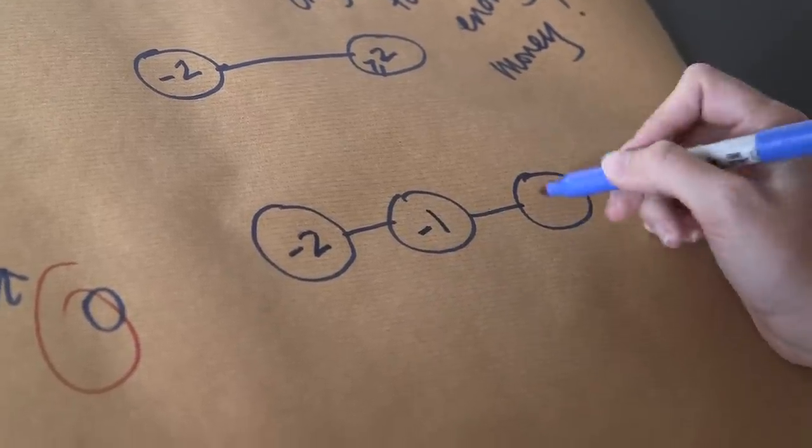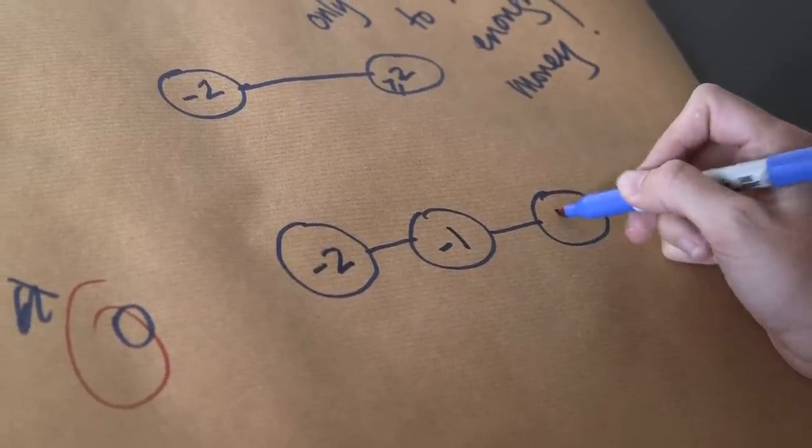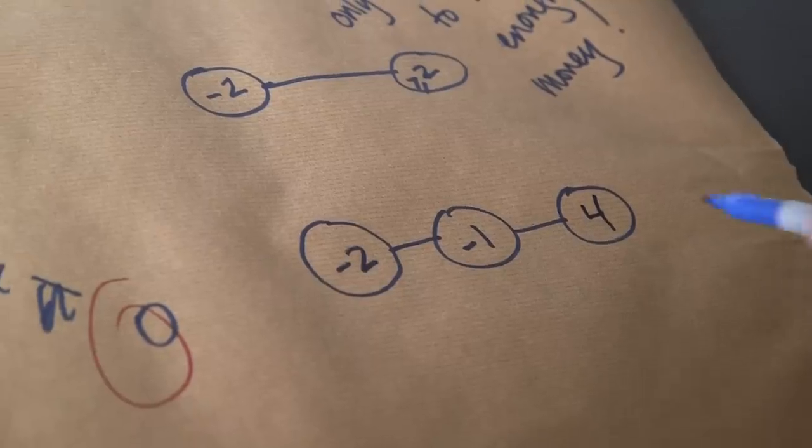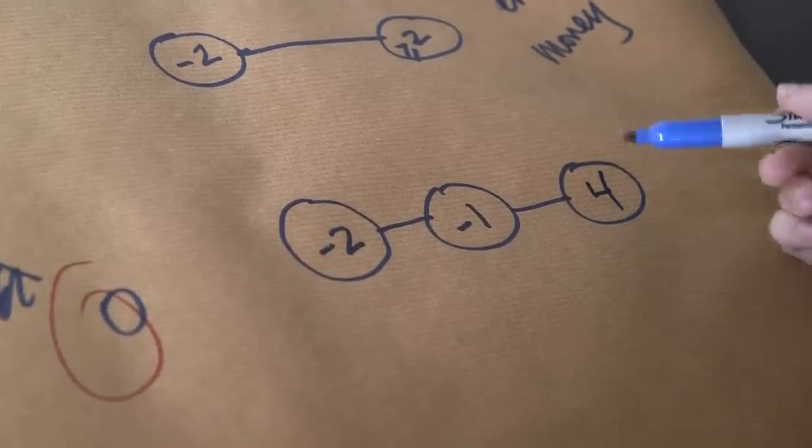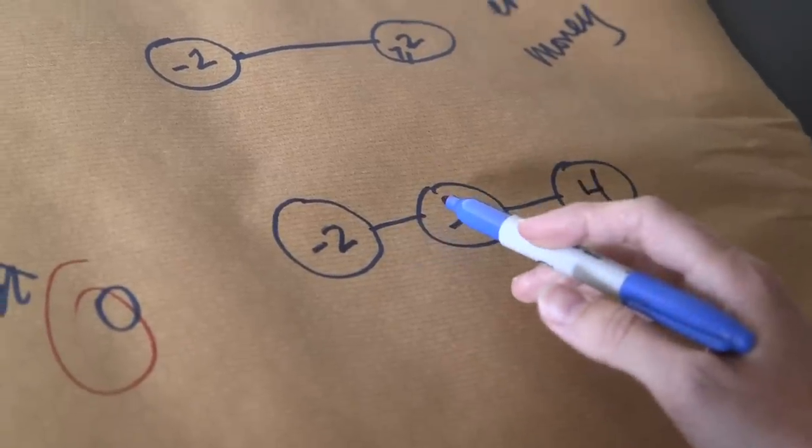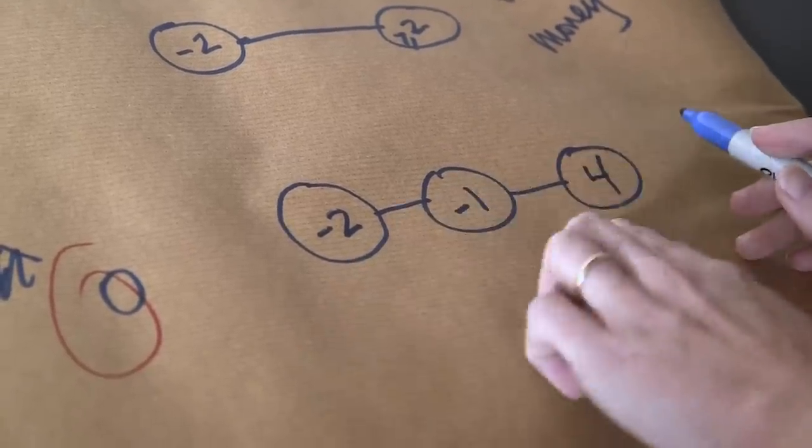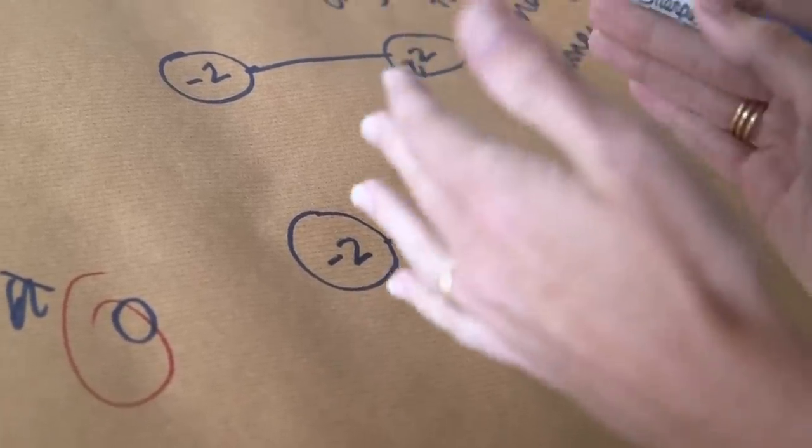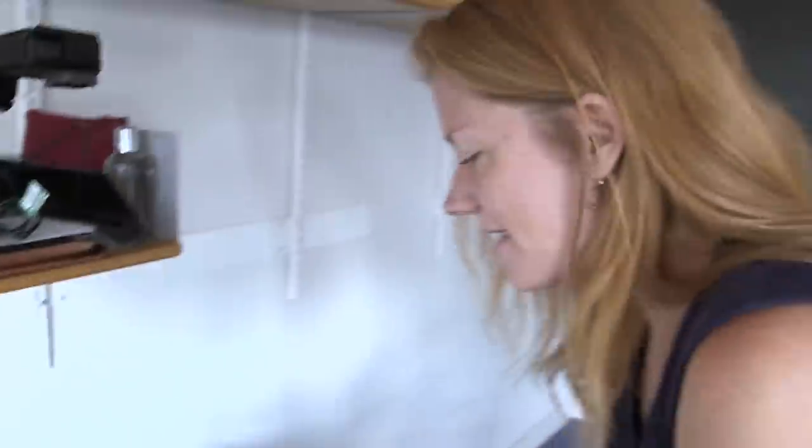Then what I can do is I can donate all of the money from the positive vertex to the other two vertices. But because of the way that they're connected, I can always balance it between the two of them so that it works. And so the thing that was true for the two vertex example is also true for this three vertex example.